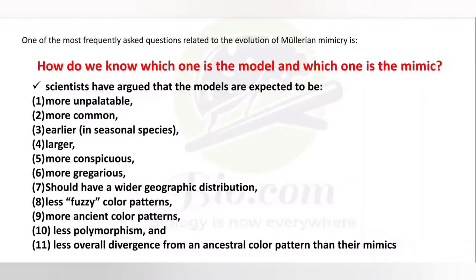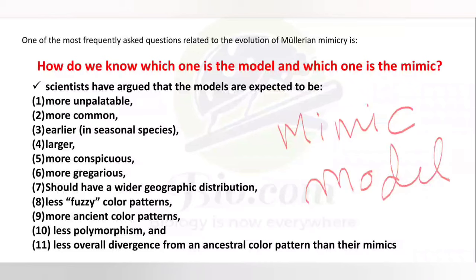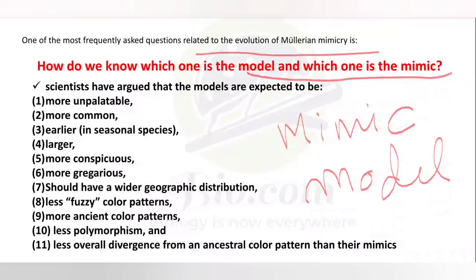Now a major question: in Batesian mimicry, we know who is the mimic and who is the model. The mimic is palatable, edible, and non-poisonous, while the model is unpalatable and poisonous. But in Mullerian mimicry, it is very difficult to identify who is the mimic and who is the model, because both look so similar — both their body coloration pattern and appearance are so similar that even a predator cannot tell which is which.